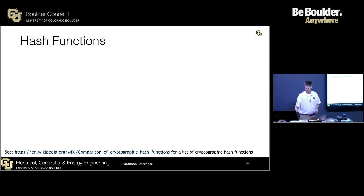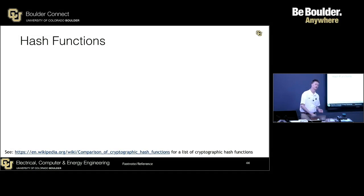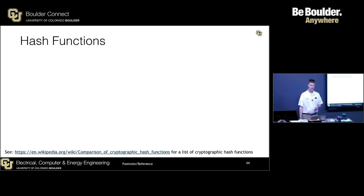Those are all the encryption algorithms we're going to talk about. There are others — there's a type of encryption referred to as elliptic curve cryptography — but we're going to stop there with PGP, AES, and RSA.